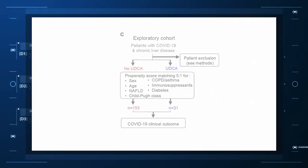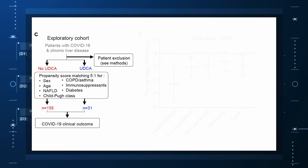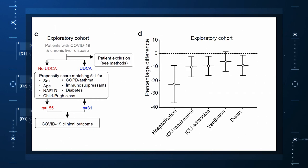Finally, they looked at the epidemiologic effect. They examined a data set that contained information on over 1,000 patients with liver disease who had contracted COVID-19 – 31 of them had been receiving UDCA. Even after adjustment for baseline differences, those receiving UDCA were less likely to be hospitalized, require an ICU, or die.